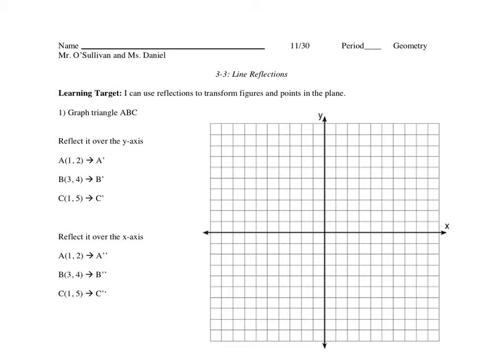So far we have learned about basic transformations and translations. What we're doing today is we're going to focus solely on how to reflect over the x-axis, y-axis, and over specific special lines, like y equals 3, x equals 1, and the negatives as well.